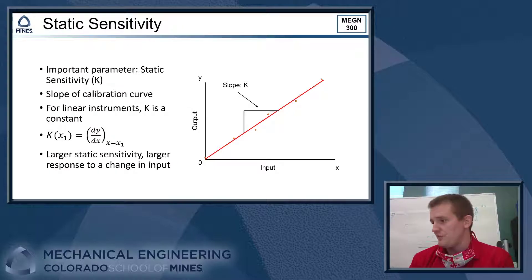All right. There's a couple of important parameters we can pull off of the calibration curve also. One of them is the static sensitivity, which is just a slope of the calibration curve. So it can be a constant. If you have a linear function, it doesn't have to be a constant. It can just be evaluated at different points. That's also okay. So in general, a larger static sensitivity means that you have a bigger response. Your scale responds more to a change in input than a scale with a smaller static sensitivity.